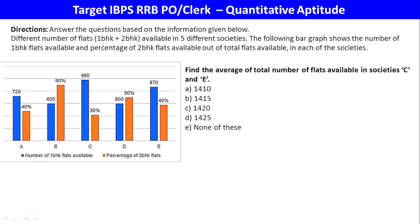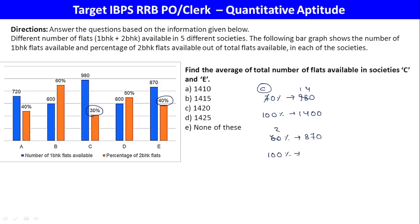Next question: Find the average of total number of flats available in society C and E together. Society E: remaining 70% of total, 70% equals 980 so 100% equals 1400. Society C: 70% value equals 870, so 100% equals 1450. Average of 1400 and 1450 equals 1425. Option B is the final answer.